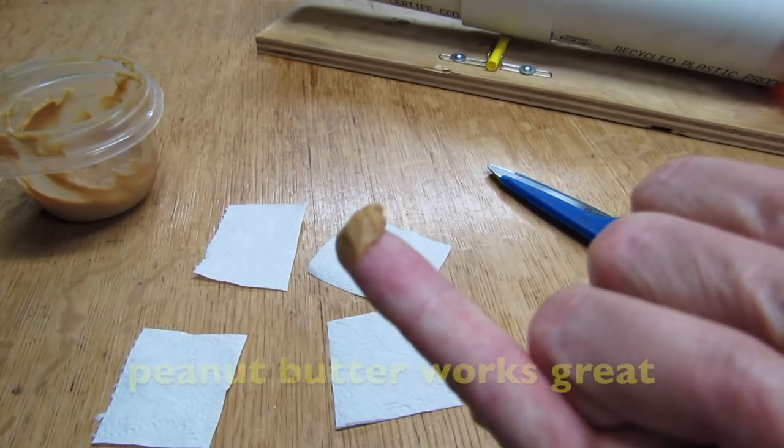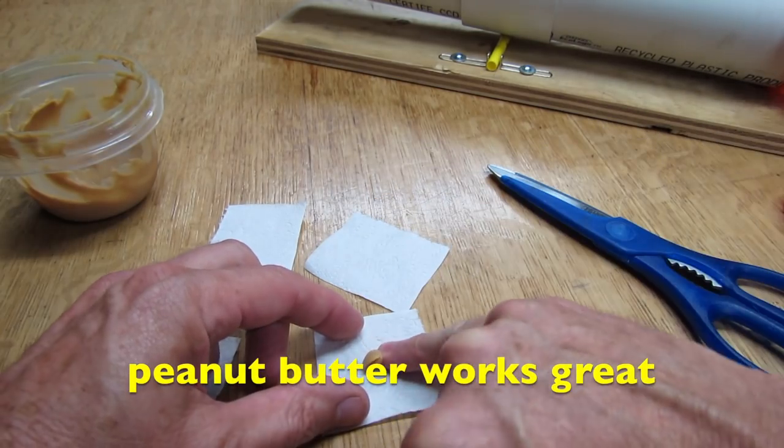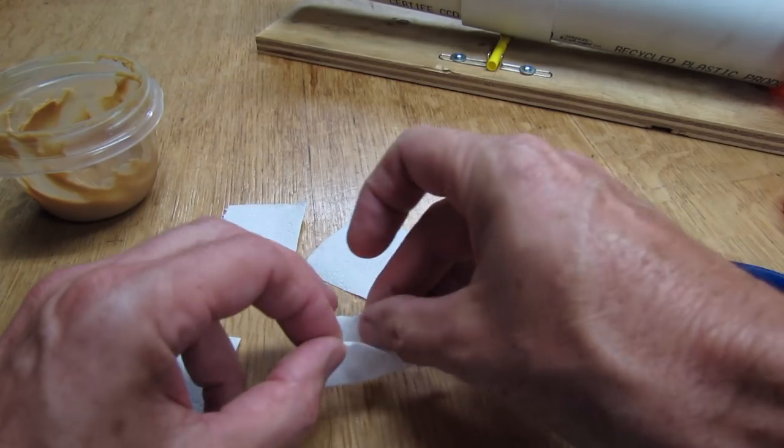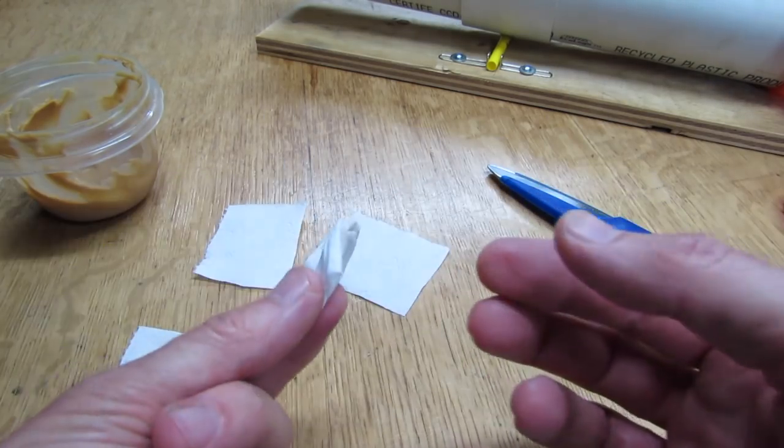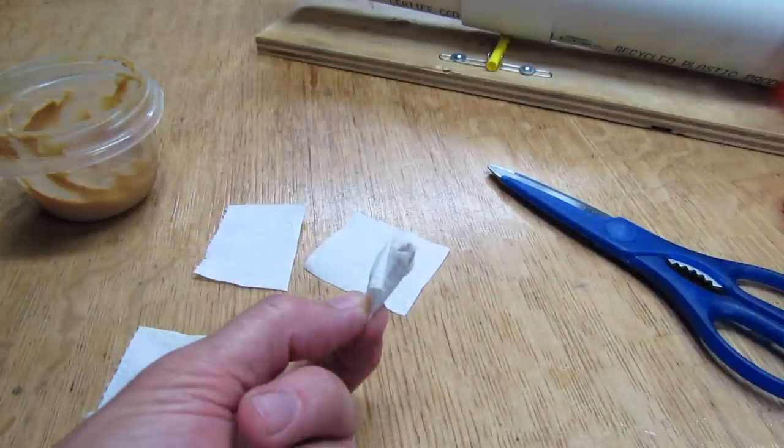Then just take about that much on the end of your baby finger, put it in the center of one of the squares. And then just fold up all the corners together and give it a little bit of a squish. And there is your little bait pellet that you can drop into the bottom of the trap.